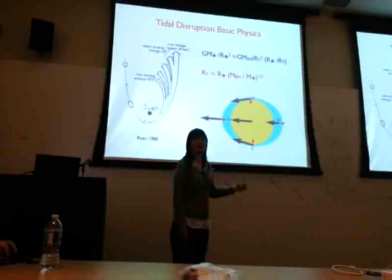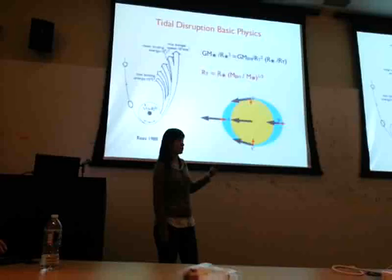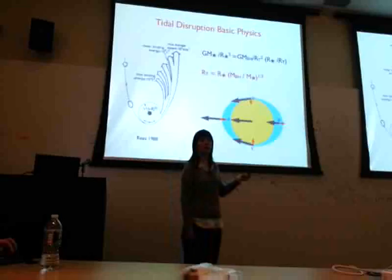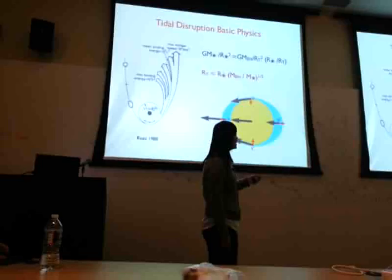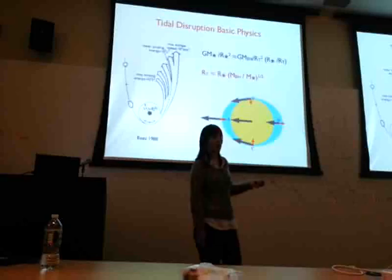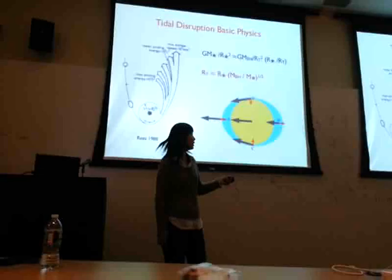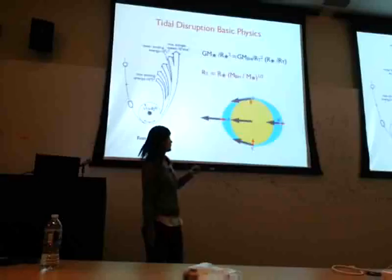A star is scattered to enter the lost cone around the supermassive black hole. The star is usually assumed to be scattered from the sphere of influence of the supermassive black hole, so it comes in from far away and carries zero binding energy. As the star pushes closer to the black hole, the side closer to the black hole feels a bigger gravitational pull, in the frame of the center of the star.